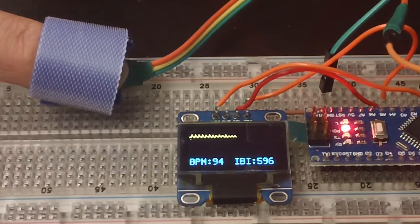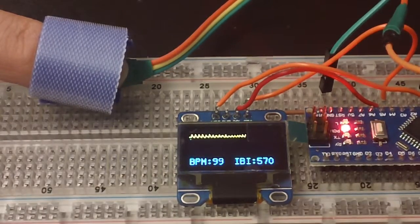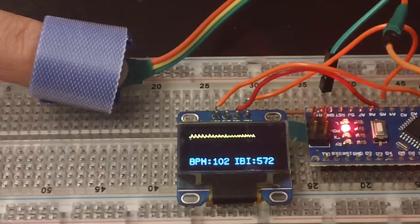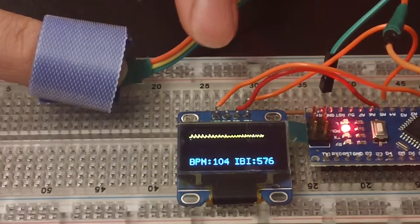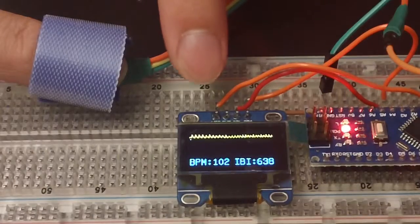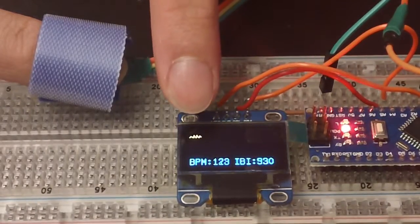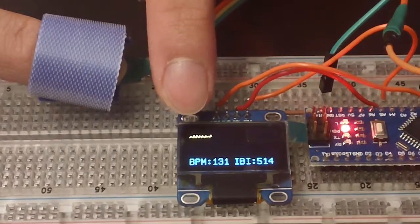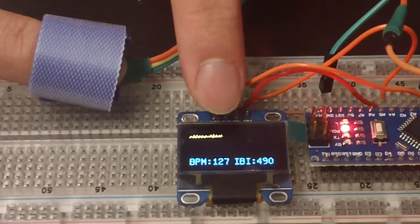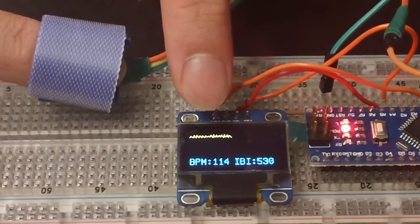As you can see, I put my finger on the pulse sensor, and wrapped it around a piece of Velcro strap. And on the OLED screen right now, we have the cardiogram for my heartbeats right here, and at the bottom of the screen, we have the BPM value, the beats per minute, and also the IBI value, the interbeat interval.